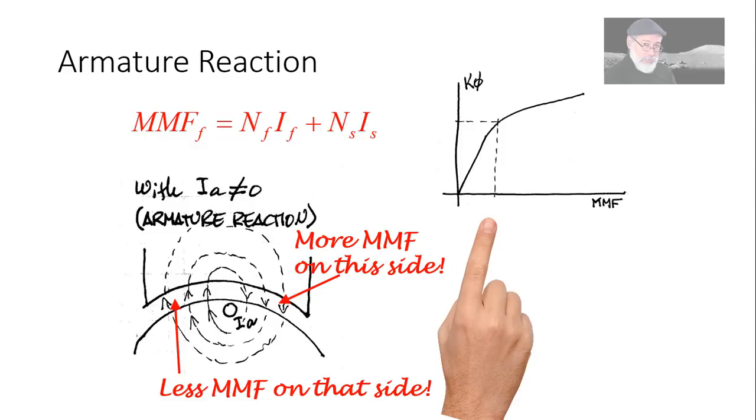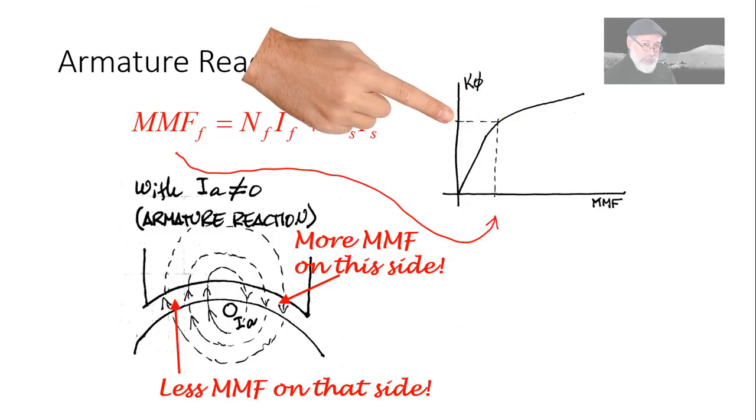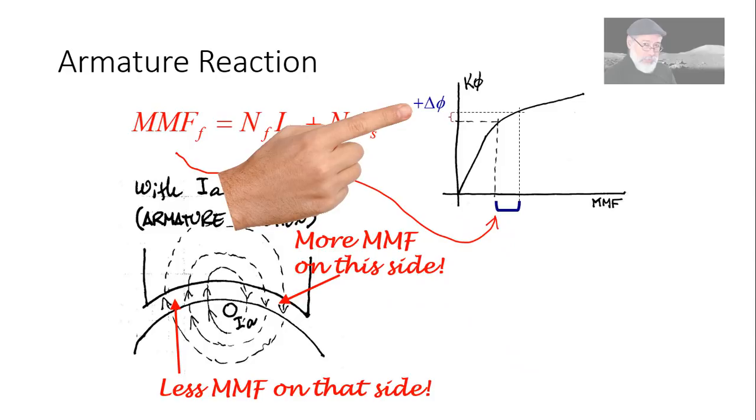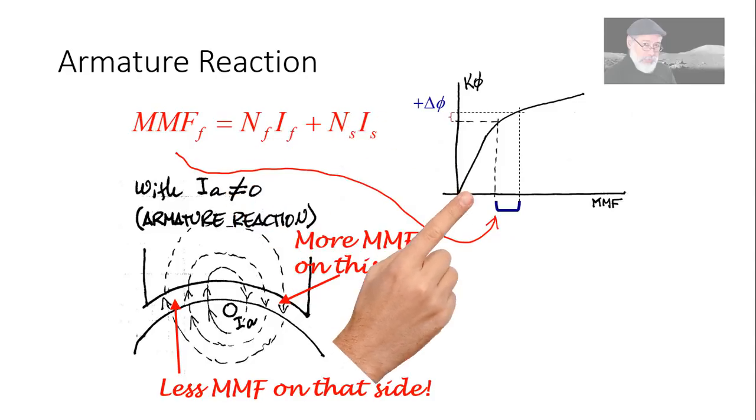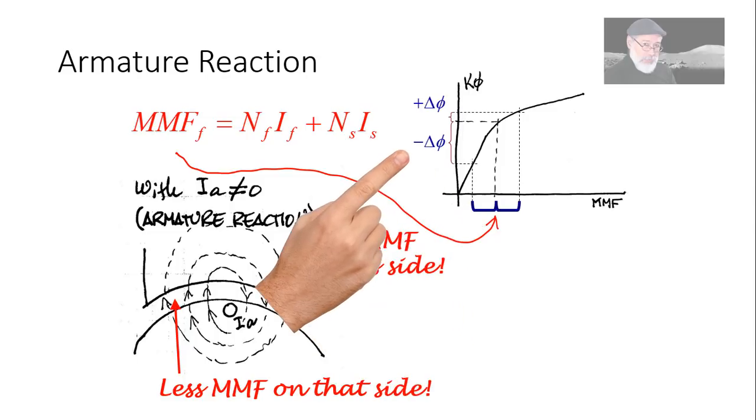Assume that the field coil and the series coil have the circuit operating at that point. That is a K5, that is a flux. But as soon as we have currents in the armature, the MMF in the air gap will increase by this much on the right hand side and the flux will increase by that much. And on the left hand side, the MMF will be decreased by exactly the same amount, which decreases the flux by a larger amount from what it was increased on the right hand side.